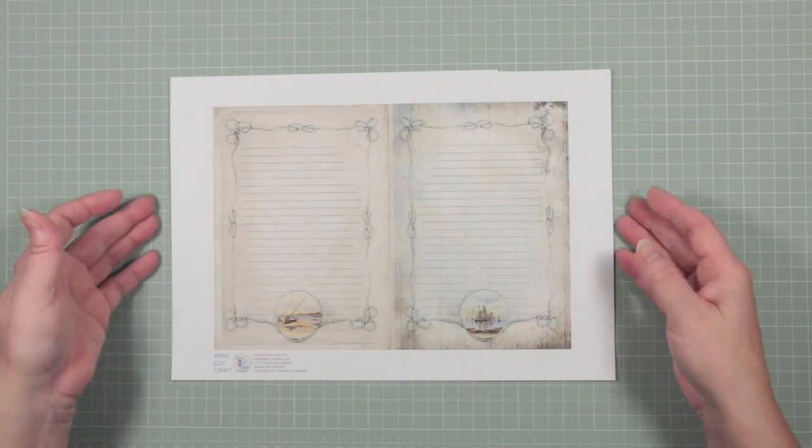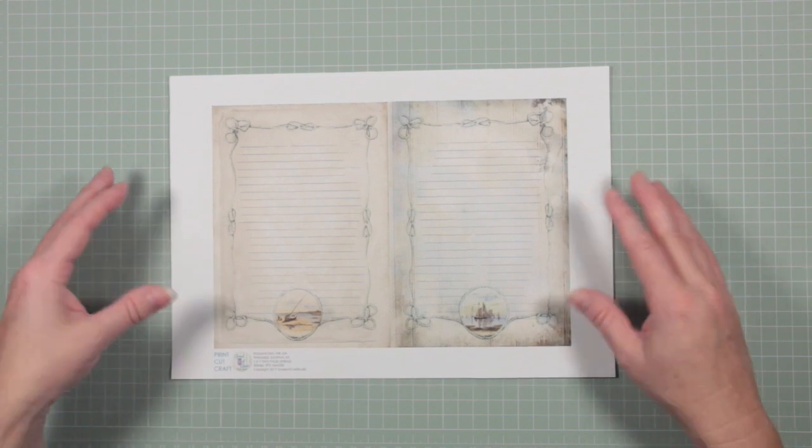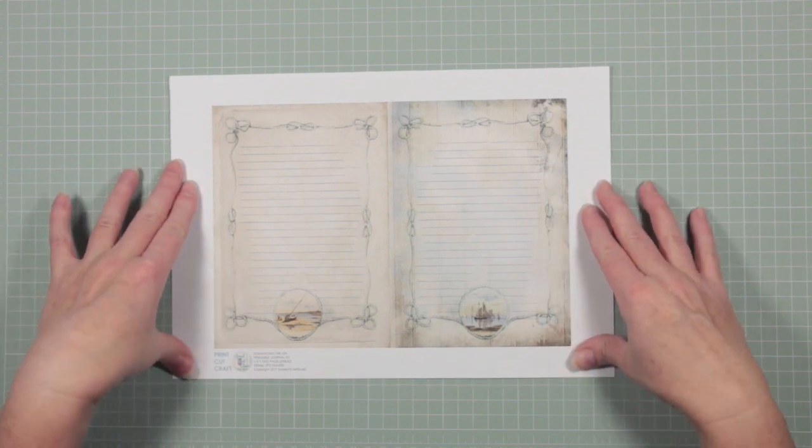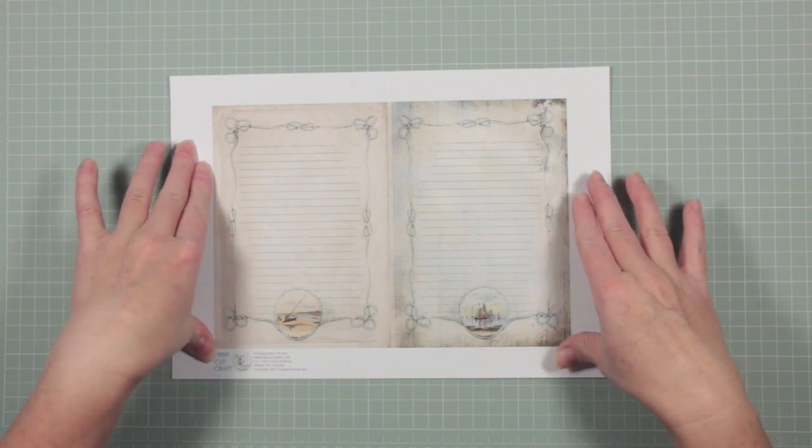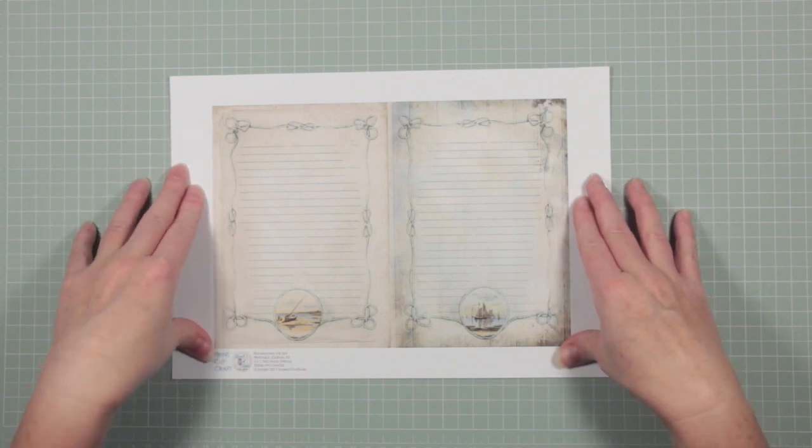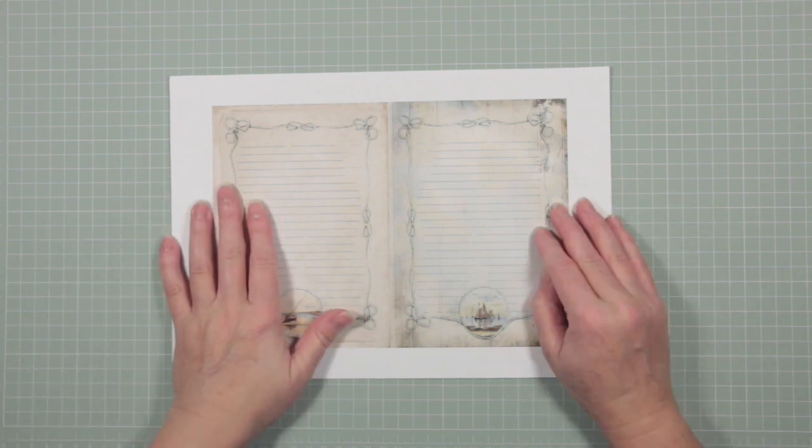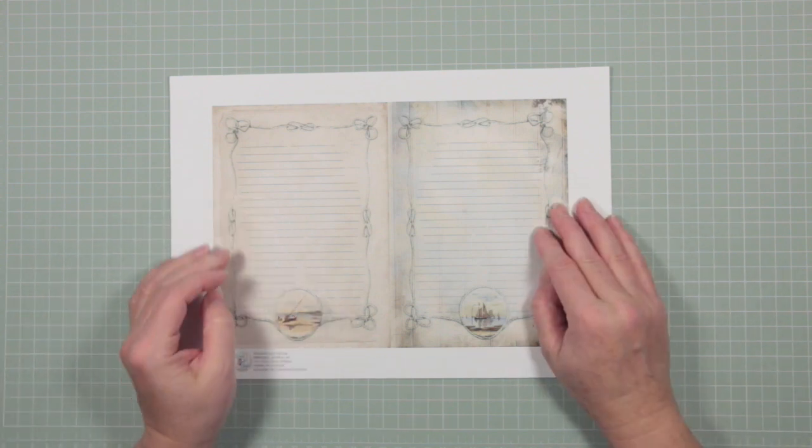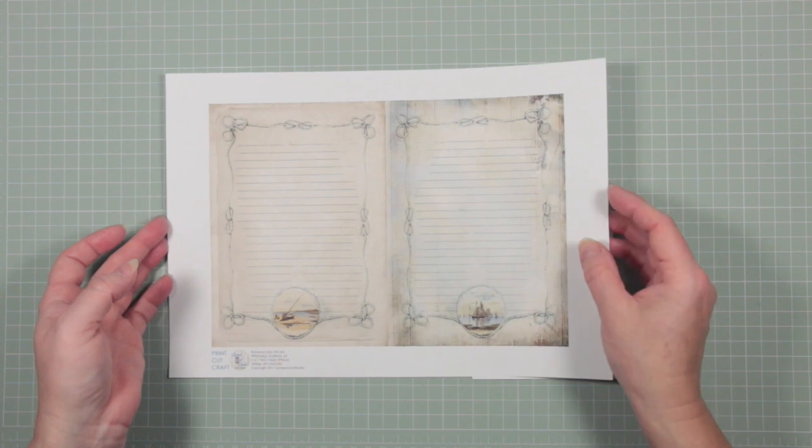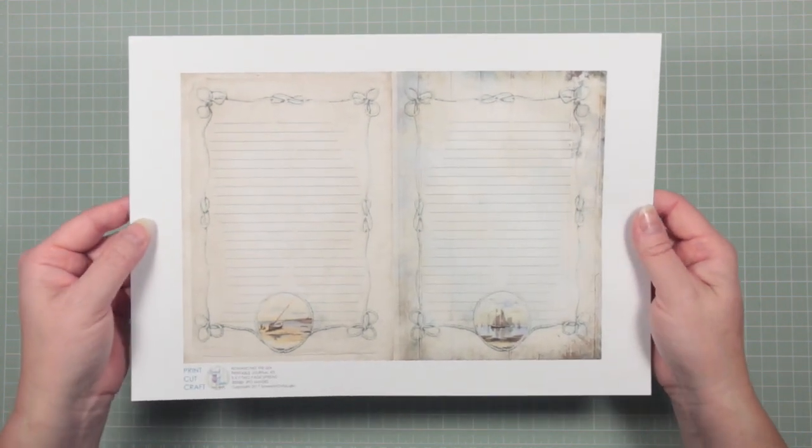I wanted to start by showing you, as an example, a couple of the pages I used from a kit online. So this is from Screech Owl Studio. You can find her on Etsy. The set is called Romancing the Sea and the images are beautiful.